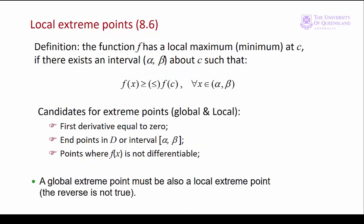Here we have a formal definition of a local extreme point. It's similar to the definition for a global extreme point, except the interval we're interested in is a sub-interval of the whole domain. Finding local extreme points is a very similar procedure to finding global extreme points — the difference is the interval we choose: either the whole domain for global extrema, or a smaller interval within the domain for local extrema.